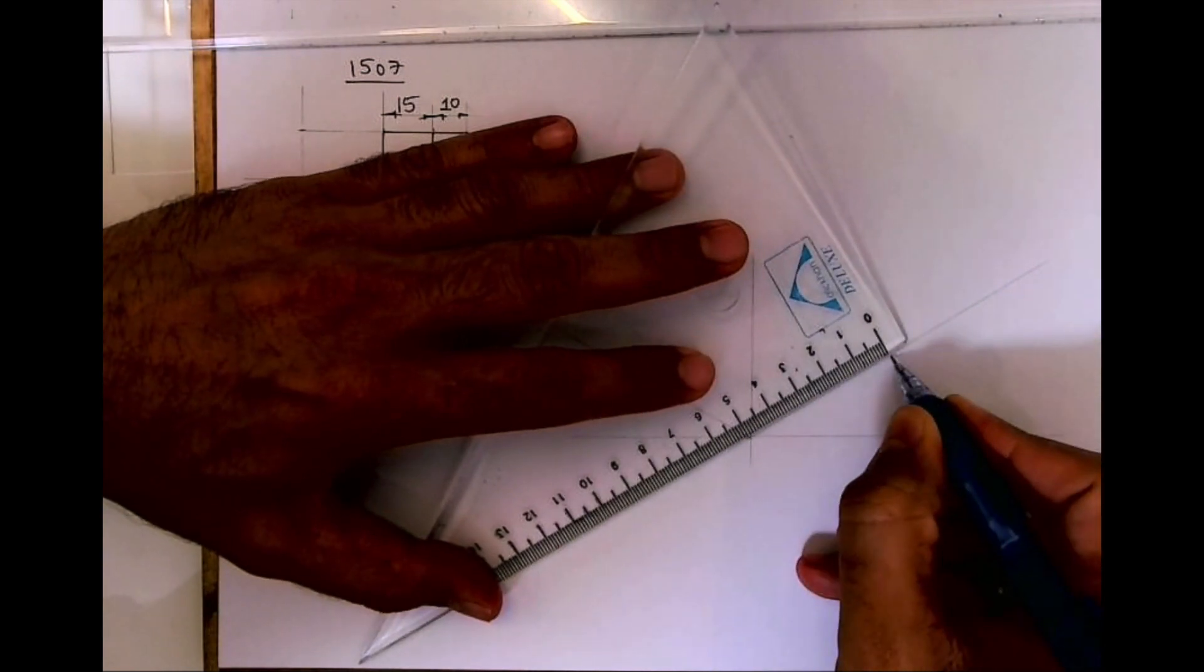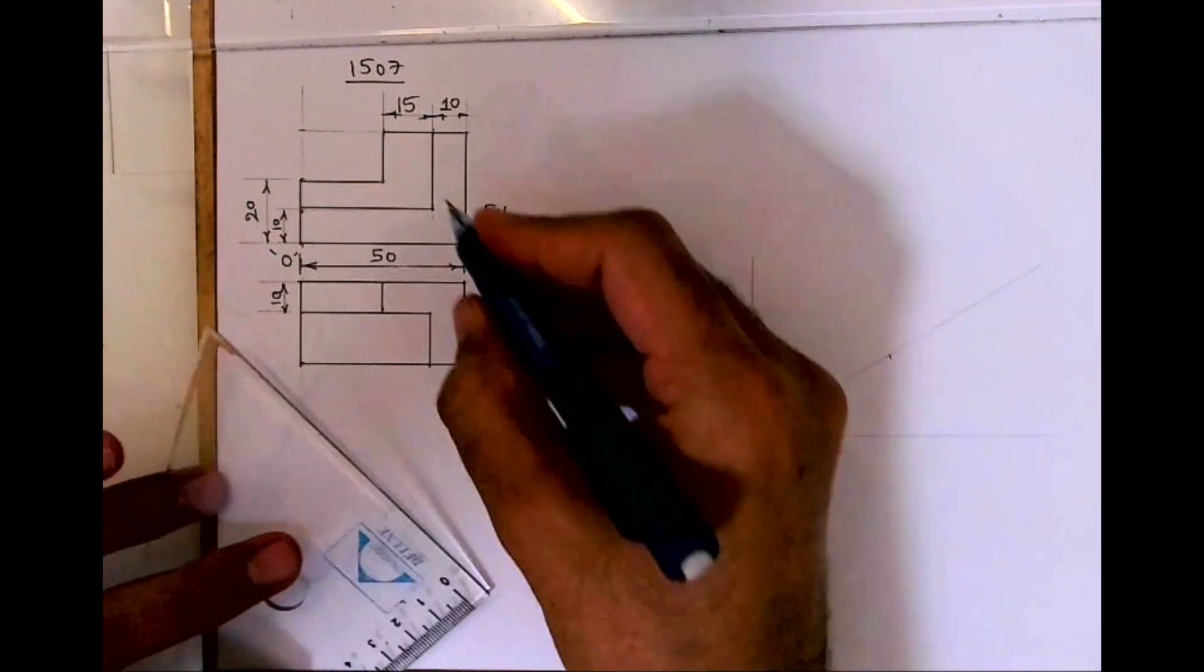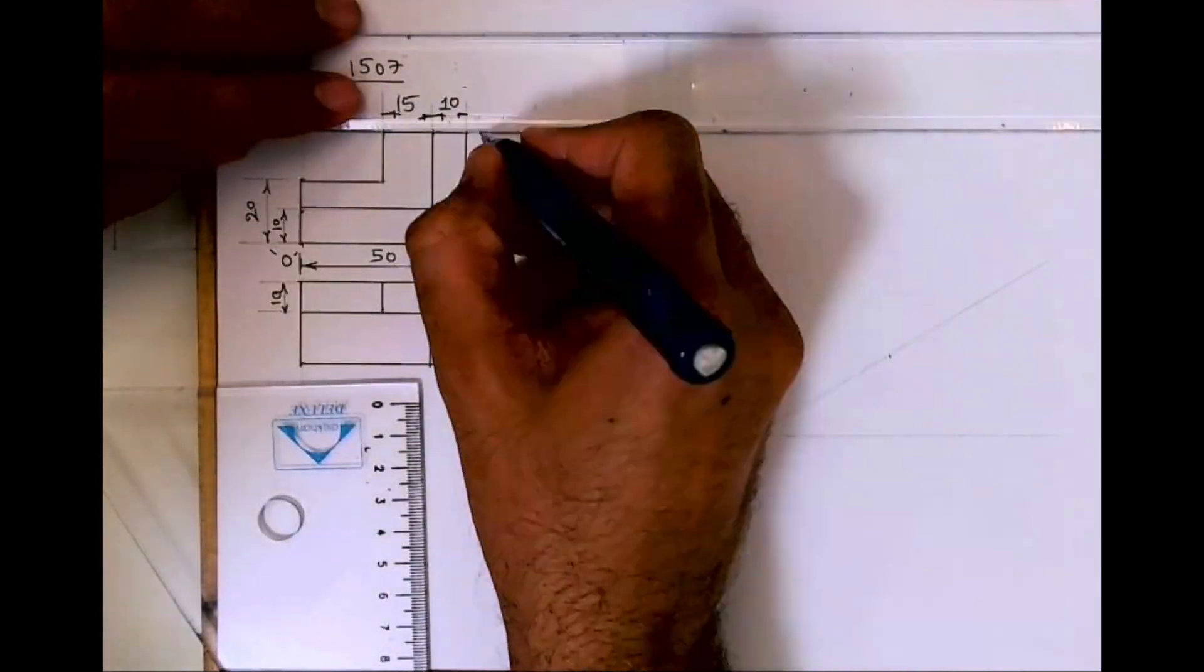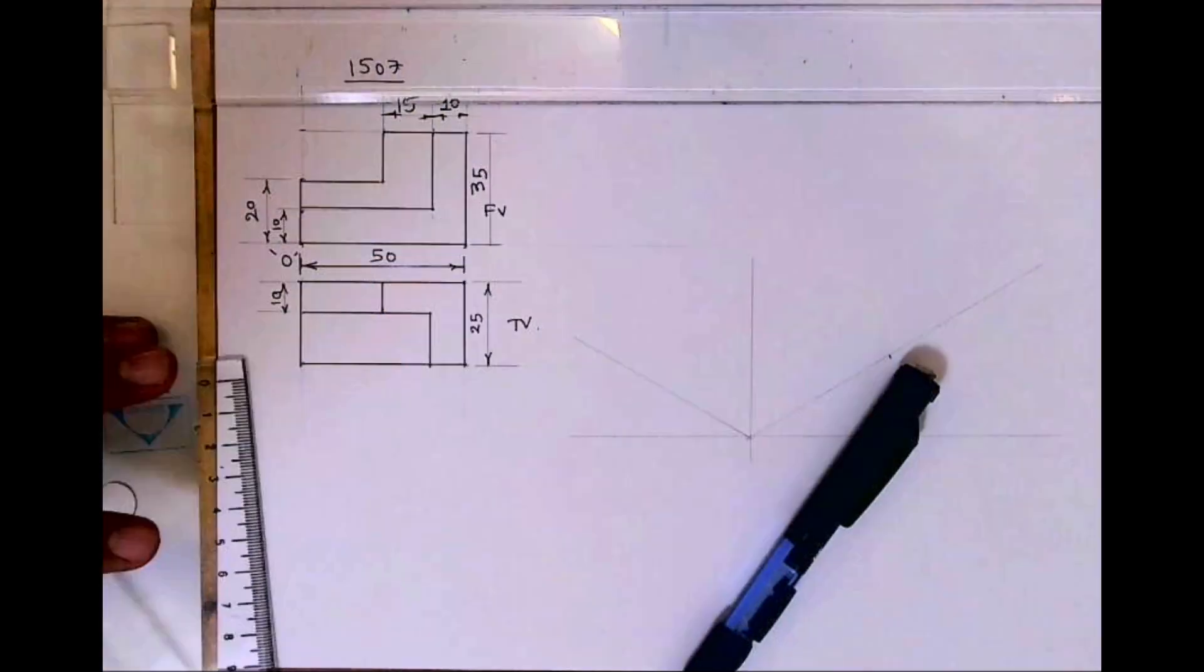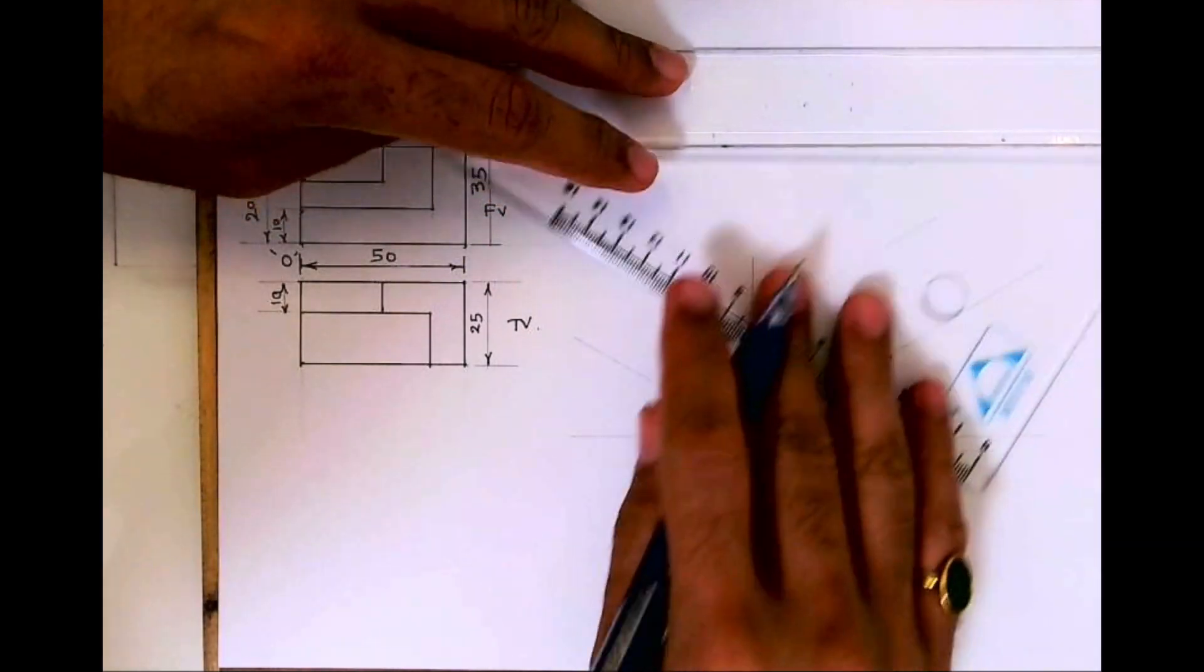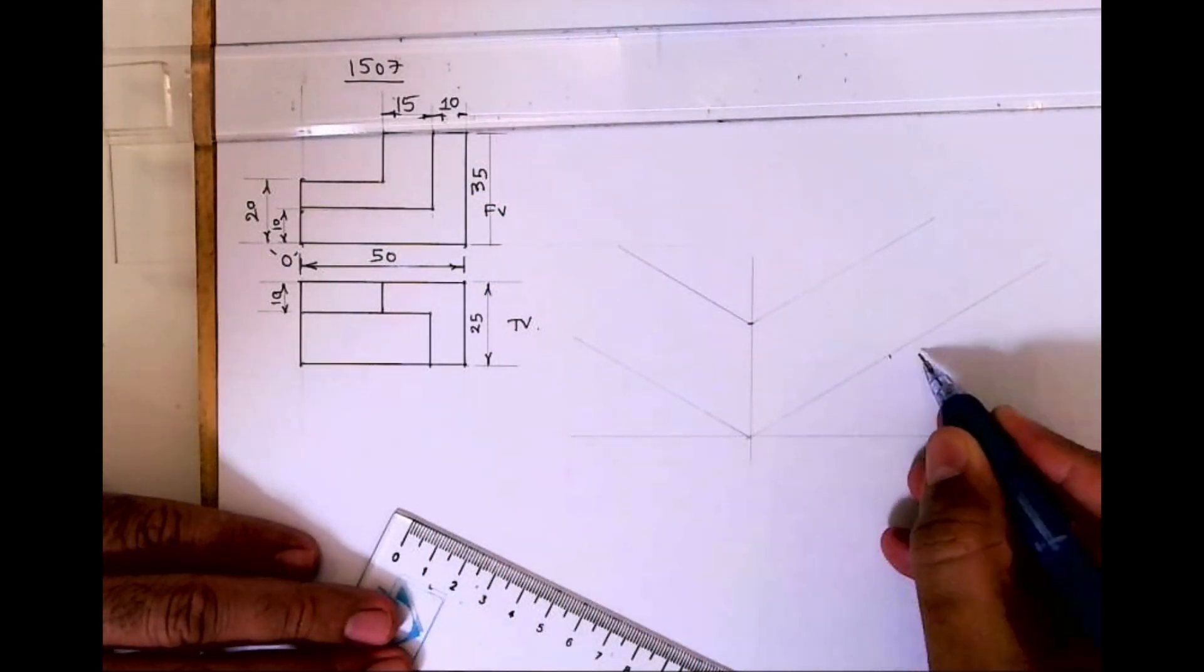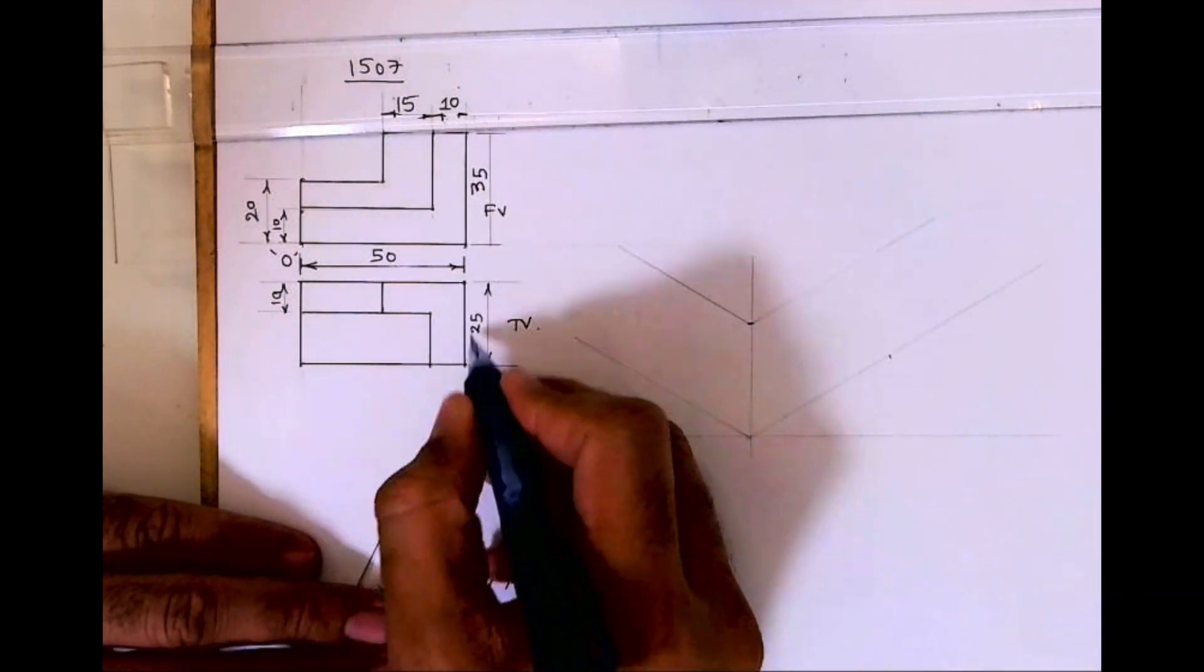Height is 35 and width is 25. 50 length, 35 height, 25 width.